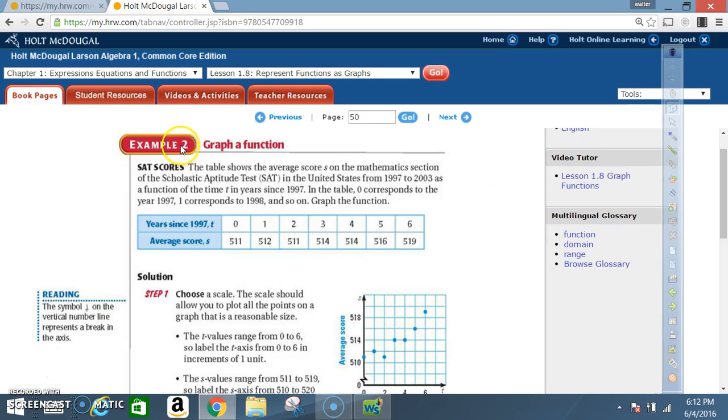Example 2. Graph a function. SAT scores. The table shows the average score, S, on the mathematics section of the scholastic aptitude test, SAT, in the United States from 1997 to 2003, as a function of time, T, in years since 1997. In the table, 0 corresponds to the year 1997, 1 corresponds to the year 1998, and so on. Graph the function.